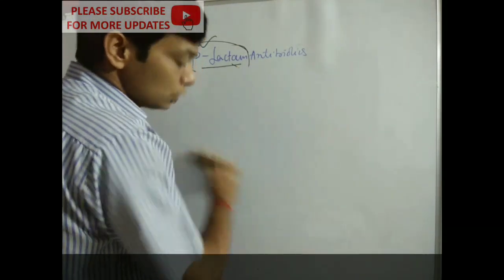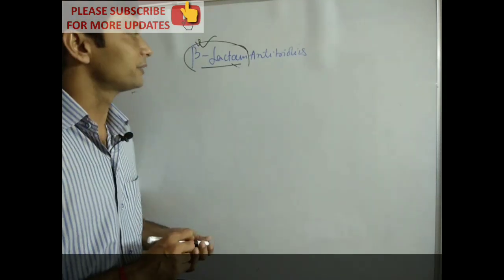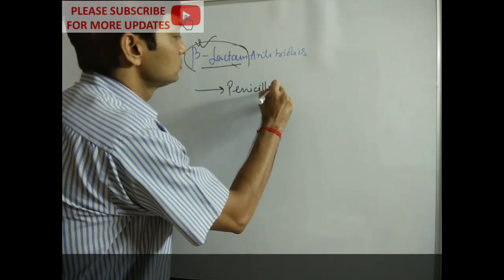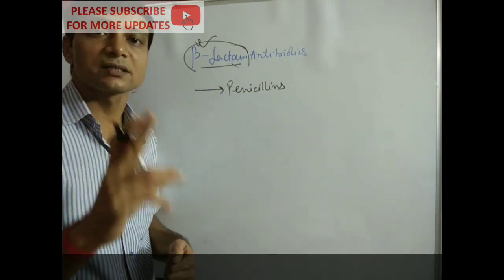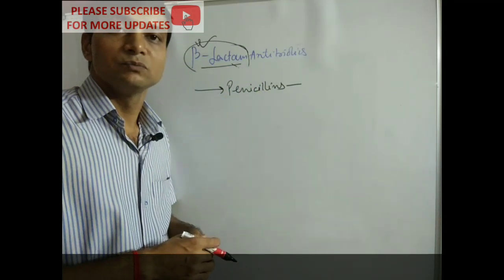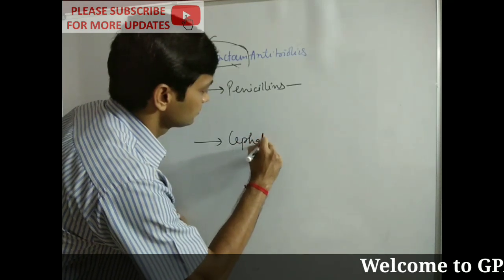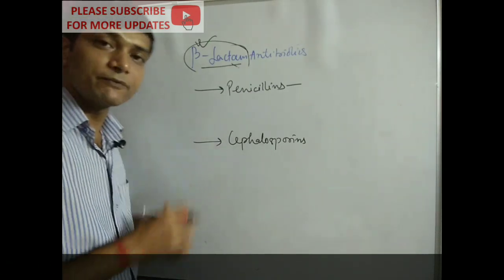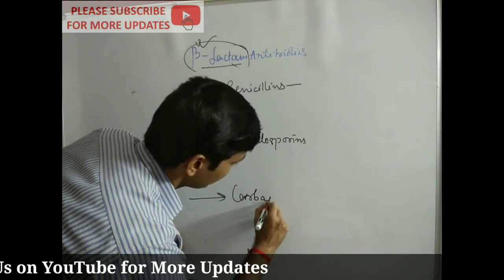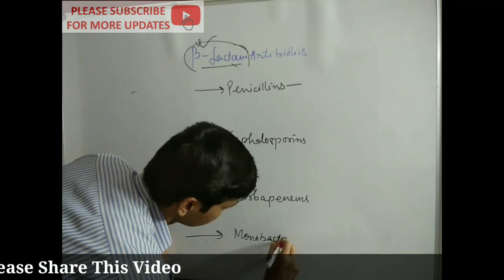Antibiotics that have this ring as a core structure are known as beta-lactam antibiotics. The first beta-lactam antibiotic discovered was penicillin — the penicillins are the first class. After penicillin, the next beta-lactam antibiotic discovered was cephalosporin. After cephalosporin, another beta-lactam antibiotic was discovered — carbapenem. And then monobactam.